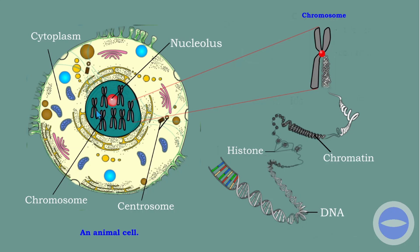Another thing we must know is the parts of the nucleus. Inside the nucleus we have the nucleolus — the part that produces ribosomes — and then we have chromosomes, which most of the time we call the chromatin network. In this chapter we will deal with chromosomes specifically. These are the things we will be focusing on.